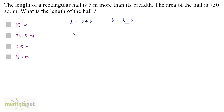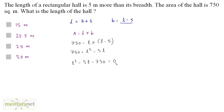We know the formula for area: area equals length into breadth, and we have been given the area as 750. So 750 equals L times (L minus 5), which gives 750 equals L² minus 5L, and therefore L² minus 5L minus 750 equals 0. This is a quadratic equation. Solving it gives two values of L: 30 and minus 25. We ignore the negative value because length cannot be negative, so the length of the hall is 30 meters. Option D is the correct answer.